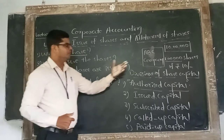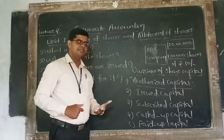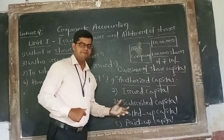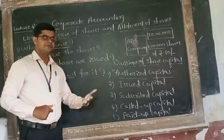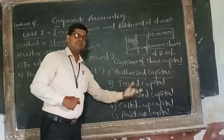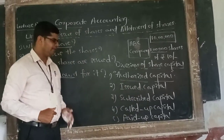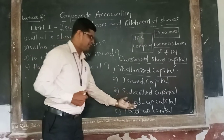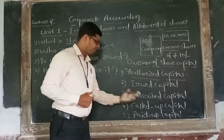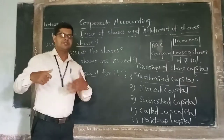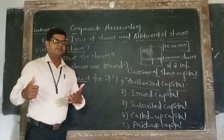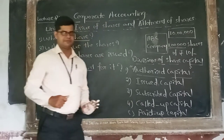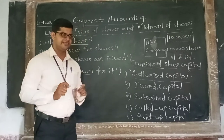As per the Companies Act, the minimum paid-up capital required — which we call authorized capital — is where the company issues shares to the public (issued capital), the public subscribes (subscribed capital), the company calls for the amount (called capital), and once payment is made, it becomes paid-up capital. Each division is connected, and companies follow these processes accordingly.